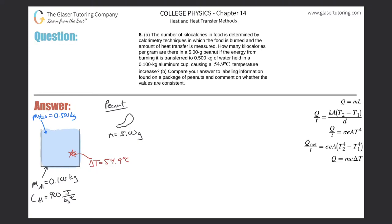Number 8, letter A. The number of kilocalories in food is determined by calorimetry techniques, in which the food is burned and the amount of heat transfer is measured. How many kilocalories per gram are there in a five-gram peanut if the energy from burning it is transferred to 0.5 kilograms of water held in a 0.1 kilogram aluminum cup, causing a 54.9 degrees Celsius temperature increase?